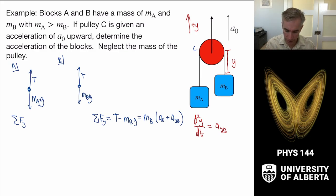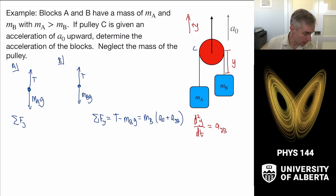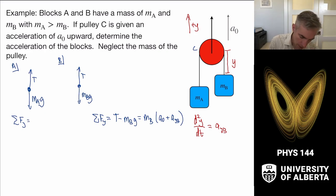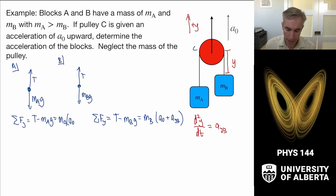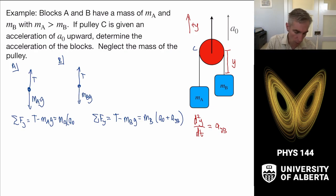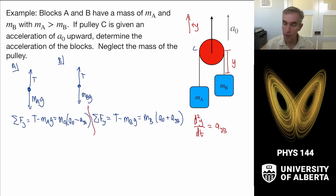These accelerations are linked. If B is moving upward at acceleration a_yB, then for object A: T minus m_A·g equals m_A times (A₀ minus a_yB), because if a_yB is positive, mass A is moving down at the same acceleration. That gives my two sets of equations, and now it's all algebra.